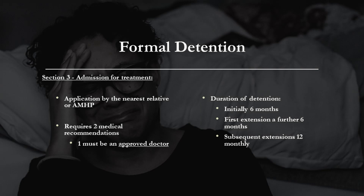Section 3 provides support for long periods of detention for the purpose of treatment. Applications are made by the nearest relative or an approved mental health professional with the support of two doctors, again one being an approved doctor. The initial period for detention is up to 6 months, but may be subject to an extension. First extensions are usually granted for 6 months, and any further extensions are usually made on a 12-monthly basis.